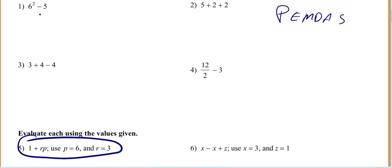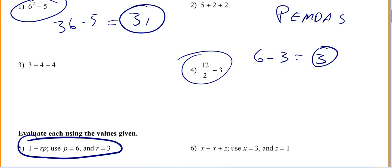Please excuse my dear Aunt Sally. Let's do number 1: 6 squared is 36, 36 minus 5 is 31. Let's do 4: 12 divided by 2 is 6, 6 minus 3 is 3.